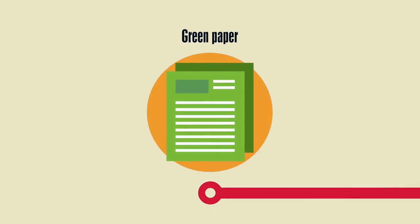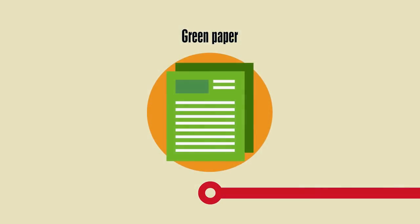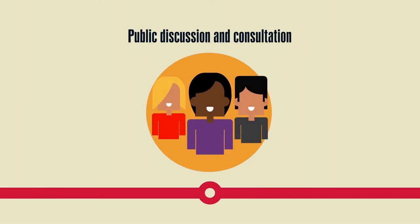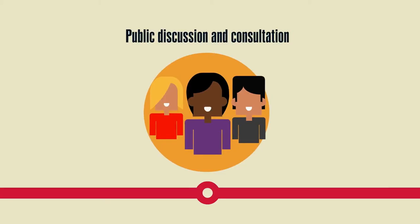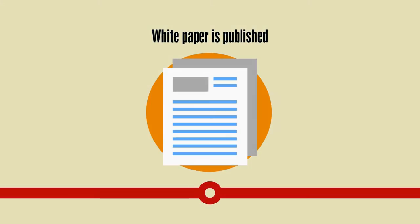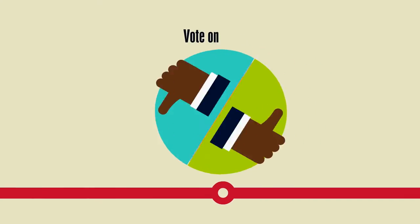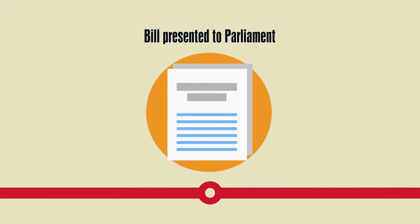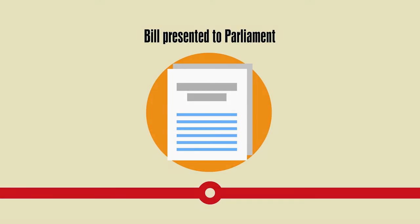Imagine the government wanted to place greater controls over the internet. A proposal called a Green Paper is published, which presents the government's ideas for future policy. This is open for public discussion, with interested groups like internet service providers and others likely to be affected. Once findings are gathered, a White Paper is published, which outlines a firmer plan for government policy. Cabinet ministers must agree whether the proposal is taken forward, and once agreed, a bill is drawn up, and the minister responsible for the policy introduces the bill to Parliament for debate.